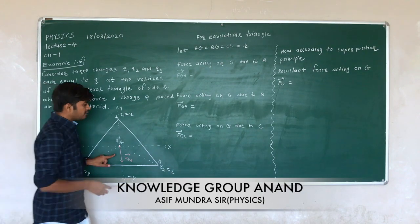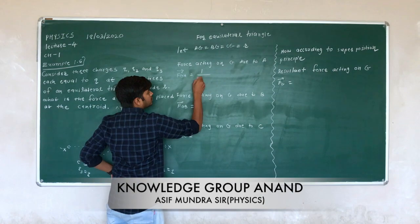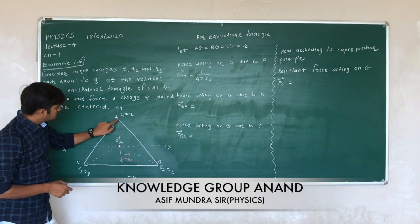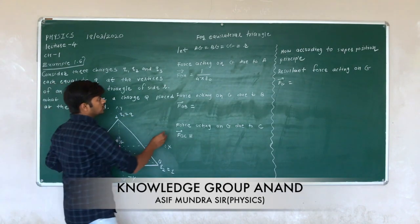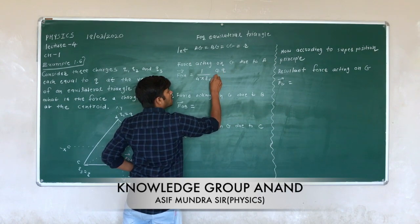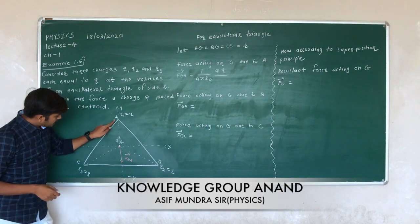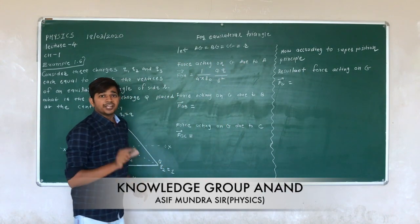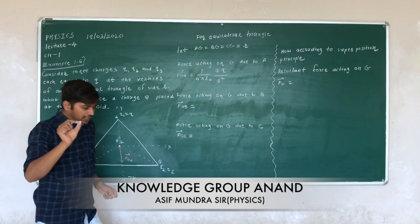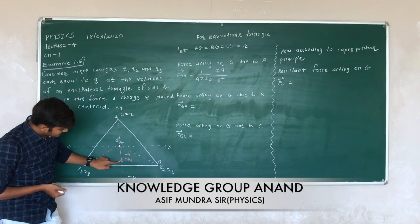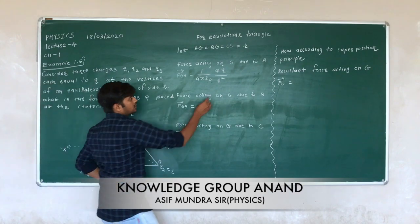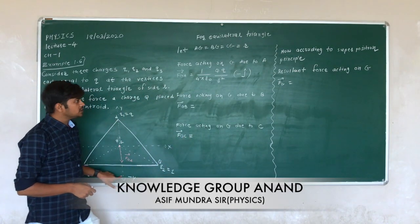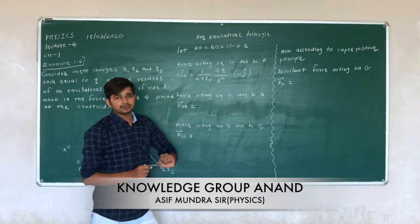So how to write it? F_GA — we know the equation: 1 over 4πε₀, charge on G is Q, charge on A is Q, so it is Q·Q upon AG squared. AG is equal to R, so it is R squared. The direction of F_GA is in the negative y direction. The unit vector in the negative y direction is minus j. So F_GA equals (1/4πε₀)(Q²/R²)(−ĵ).